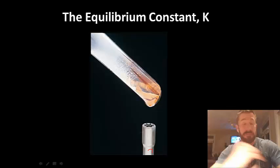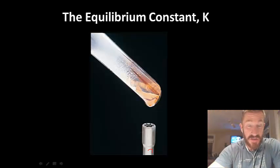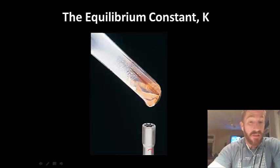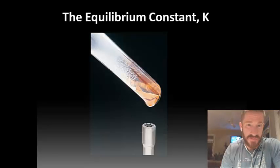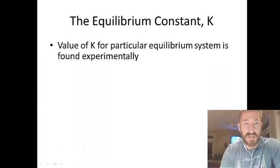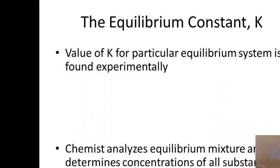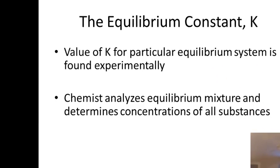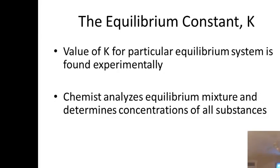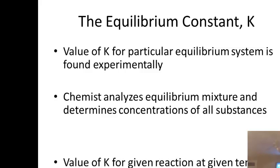The equilibrium constant, K. Today we're going to focus our discussion on the equilibrium constant and some specific differences between the equilibrium constant and some other values. The equilibrium constant K is determined experimentally — all the values are found in the lab. A chemist will analyze the equilibrium mixture in terms of the concentrations of all the species in the reaction: all the reactants and all the products.